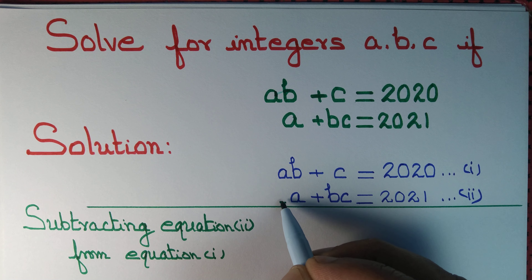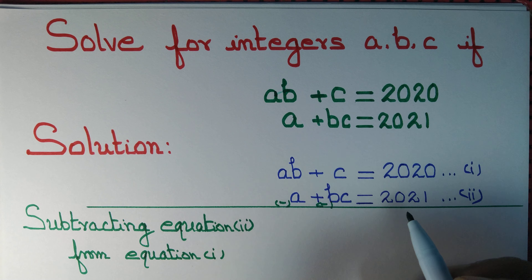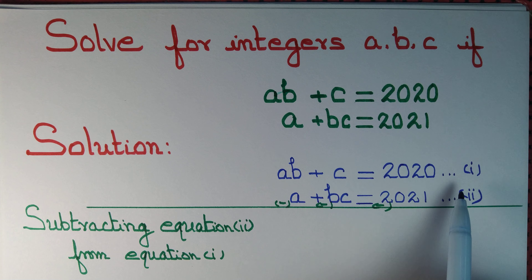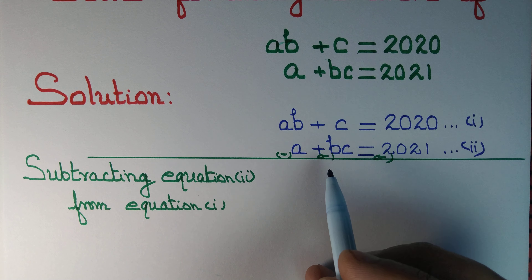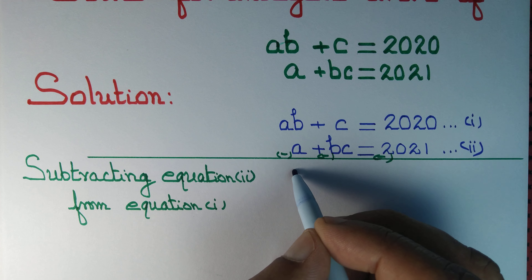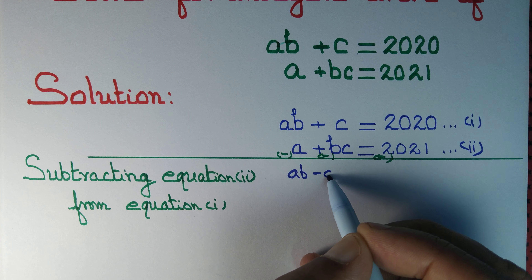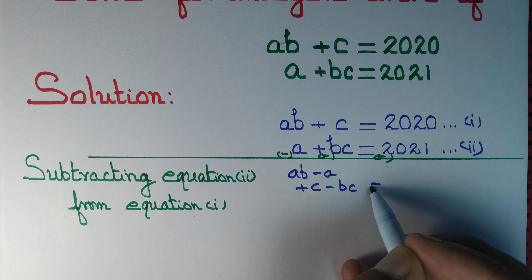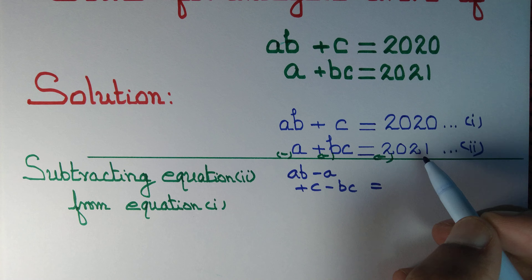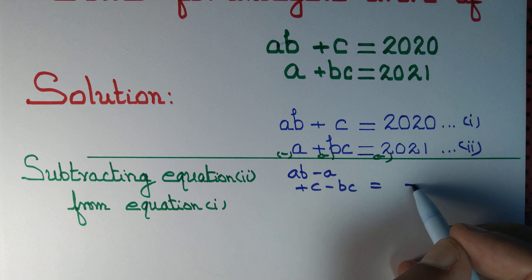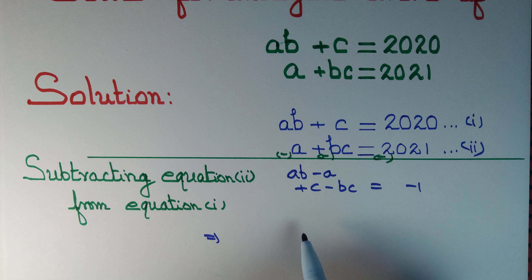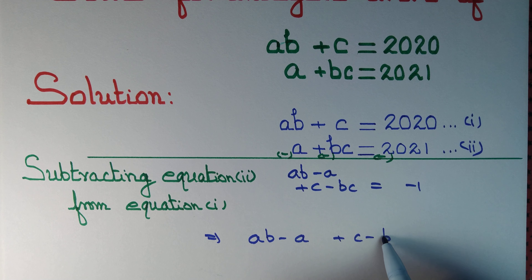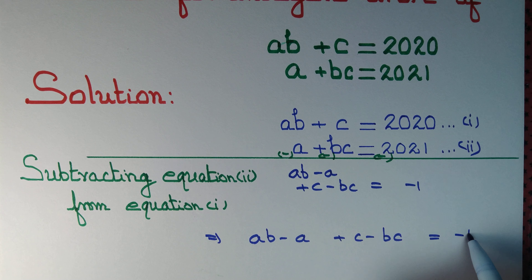Subtracting equation 2 from equation 1, we get: ab - a + c - bc = 2020 - 2021, which equals -1. So we write: ab - a + c - bc = -1.